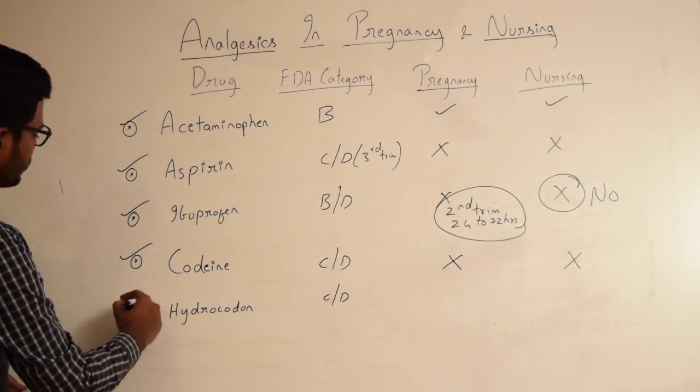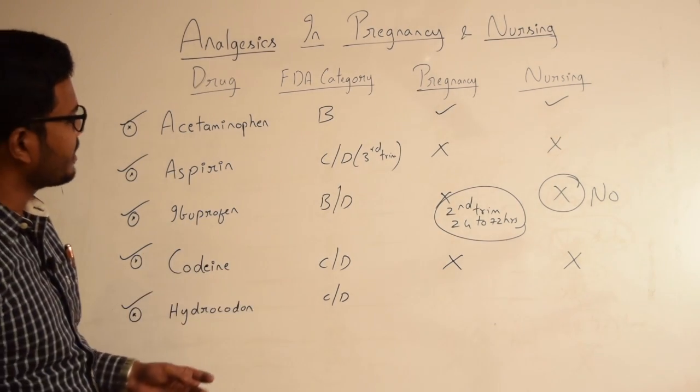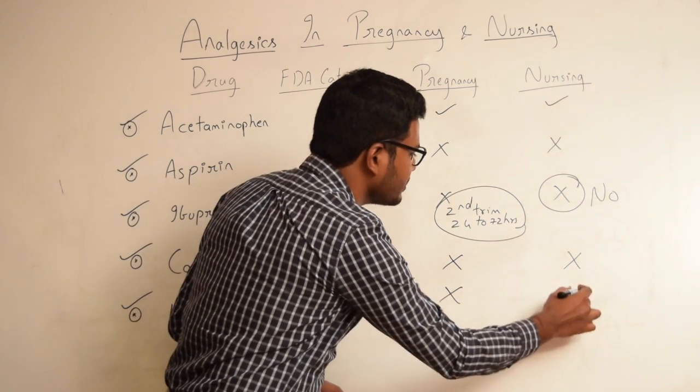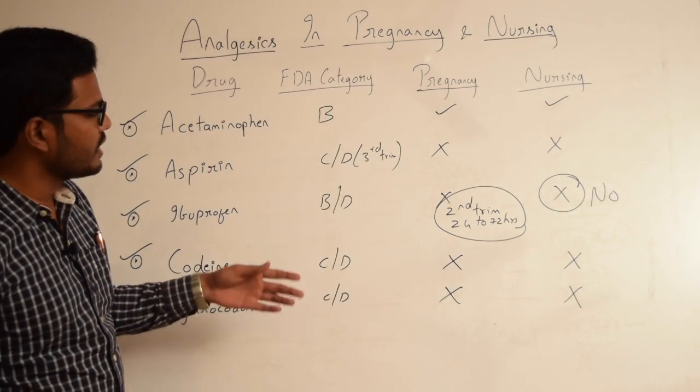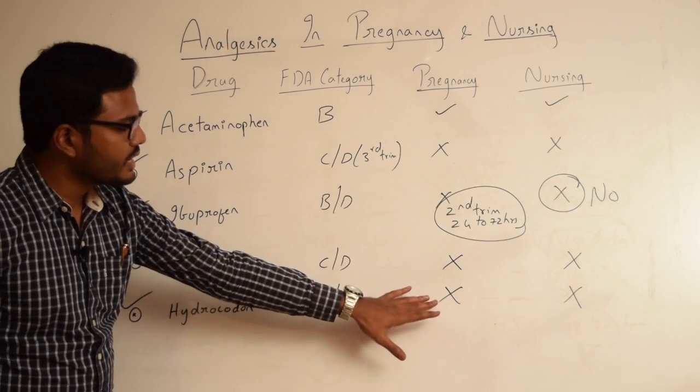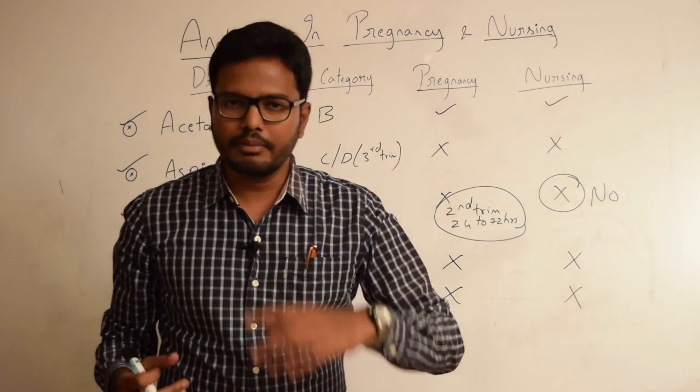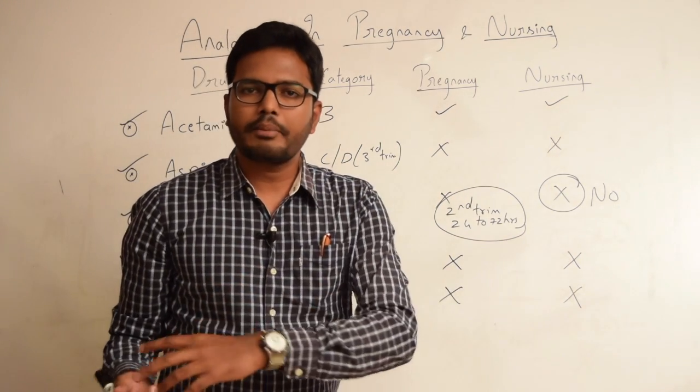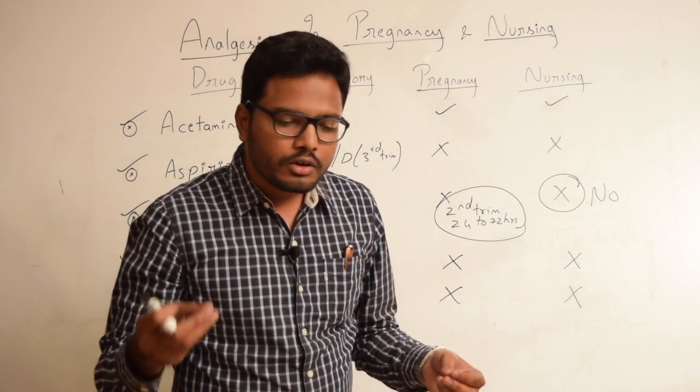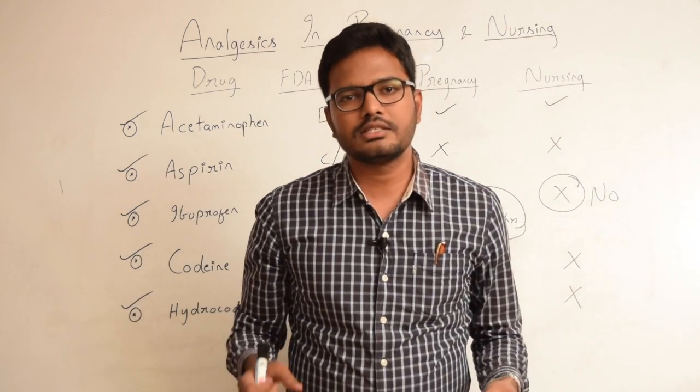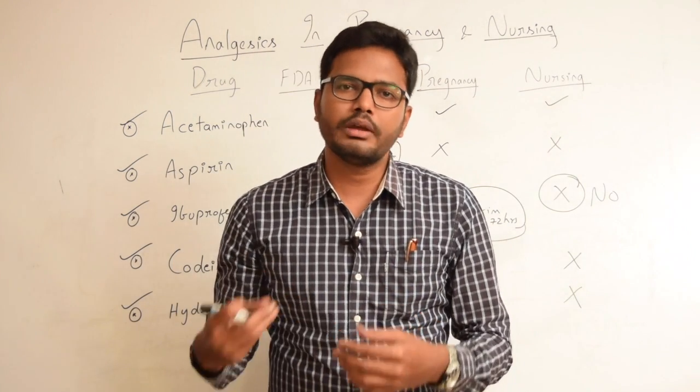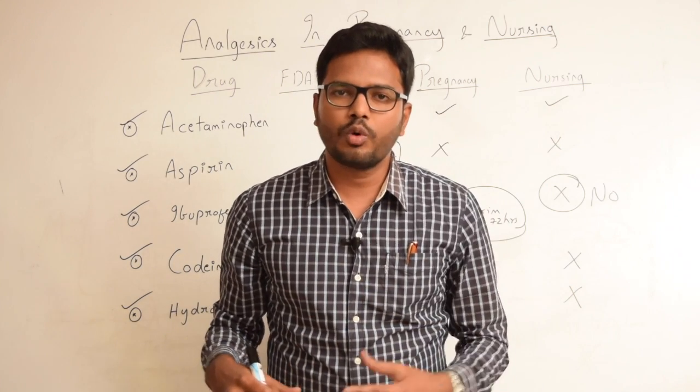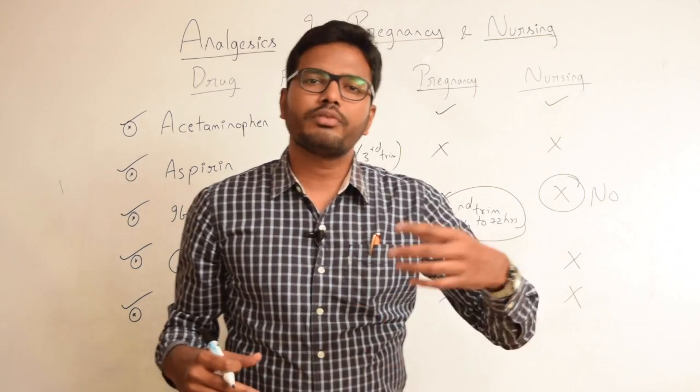Moving on to hydrocodone. Even that belongs to category C or D, so it is not indicated in pregnancy as well as in nursing. The reason is more or less the same because of its teratogenic effect leading to neonatal respiratory depression. Also, the effect is similar to that of codeine because of ultra-rapid metabolism present in certain women due to alterations in genes leading to formation of an altered cytochrome P450 enzyme within liver, thereby leading to fast metabolism of codeine to morphine, leading to morphine overdose in the child.